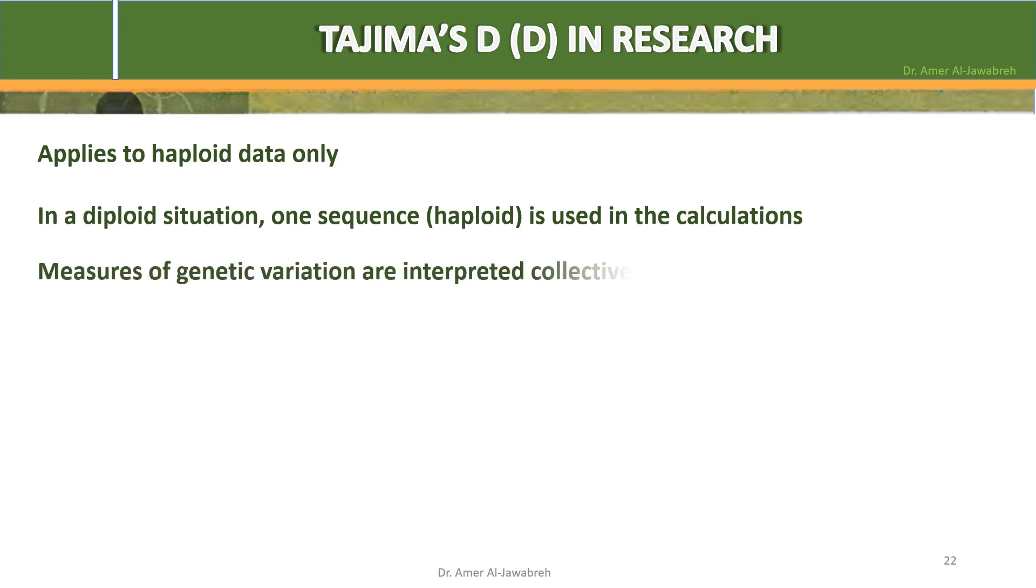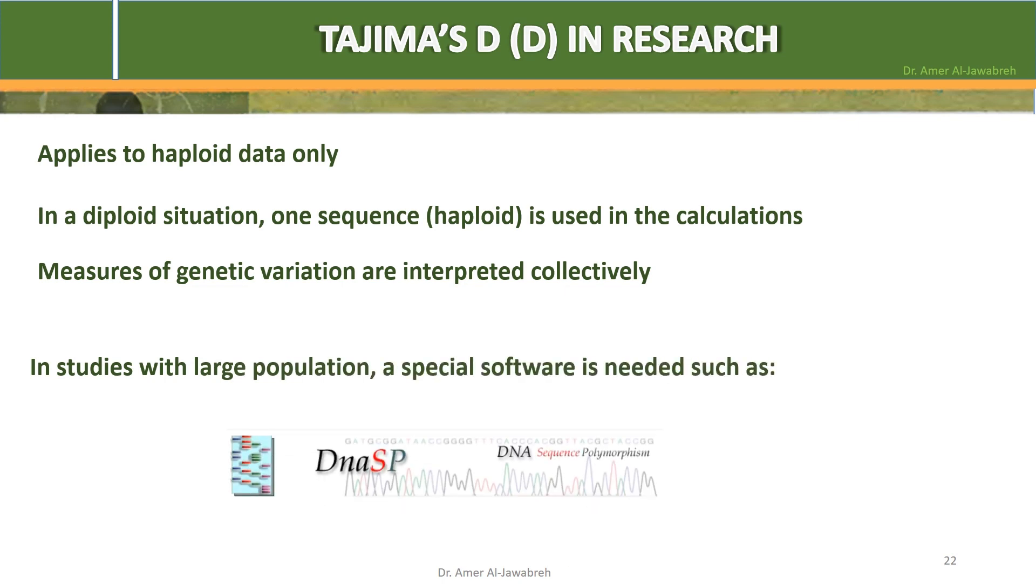Tajima's D in research applies to haploid data only. In a diploid situation, one sequence haploid is used in the calculations. Measures of genetic variation are interpreted collectively. In studies with large population, a special software is needed such as DNA SP.